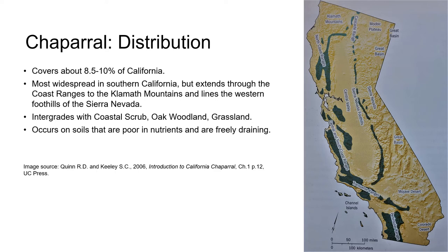Now let's look at Chaparral. Chaparral covers about eight and a half to ten percent of the state of California, and it's most widespread in the transverse and peninsular ranges in Southern California. It extends up through the coast ranges into the Klamath Mountains in the north, then lines the western foothills of the Sierra Nevada. Chaparral often integrates with other plant communities such as Coastal Scrub, oak woodland, and grassland.